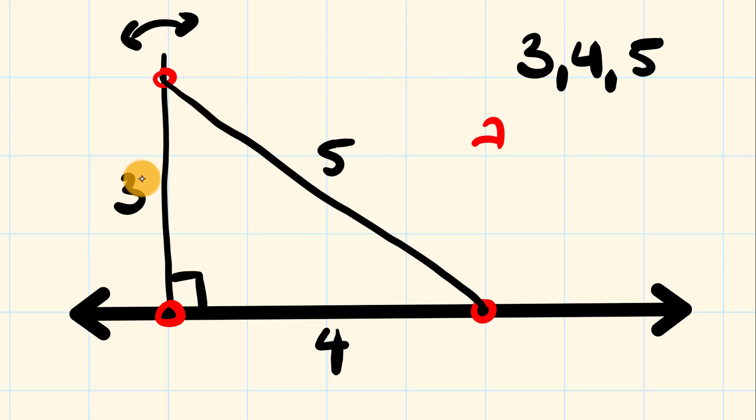which states that a squared plus b squared is equal to c squared. Now, what does that all mean? Well, we have these two shorter sides here, a and b.